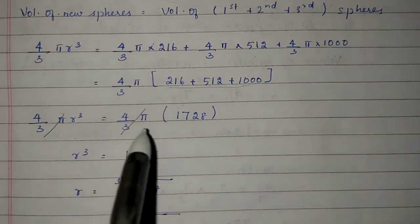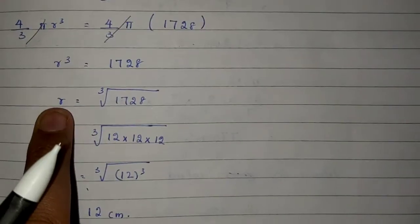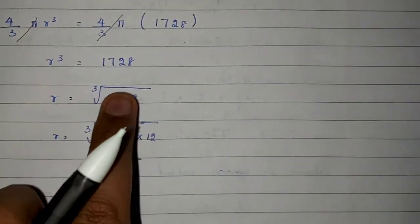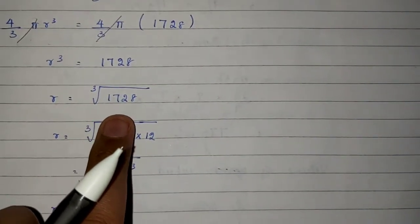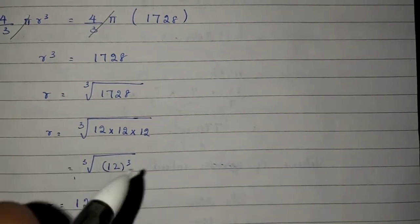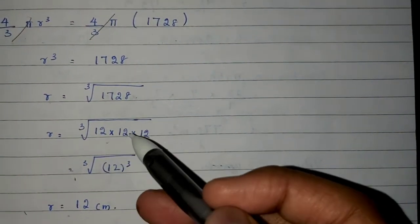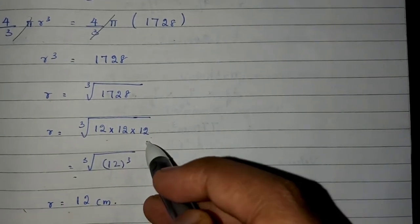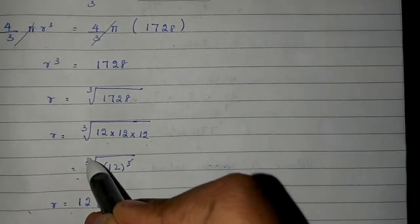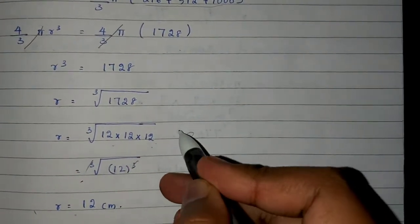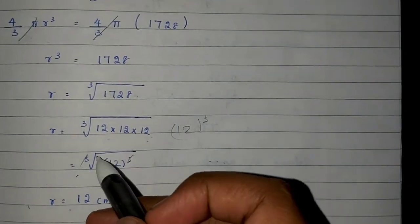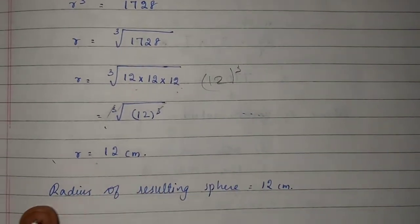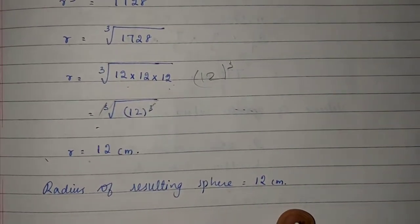Setting equal to volume of new sphere: (4/3)π × R³ = (4/3)π × 1728. So R³ = 1728. Taking cube root: R = 12, since 12 × 12 × 12 = 1728. Therefore the radius of the resulting sphere is 12 cm.